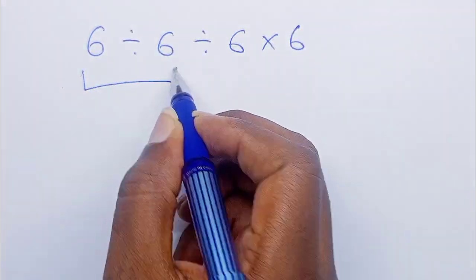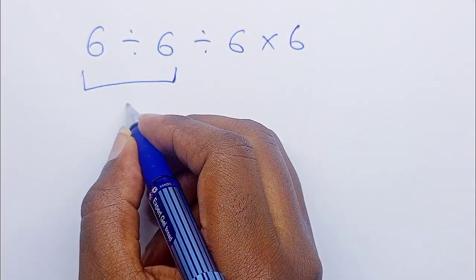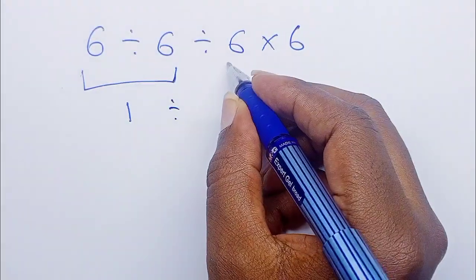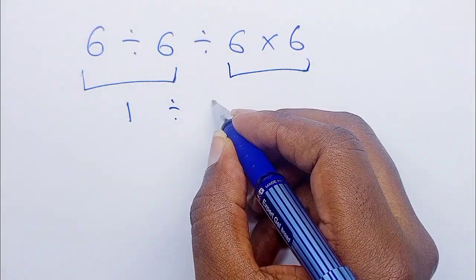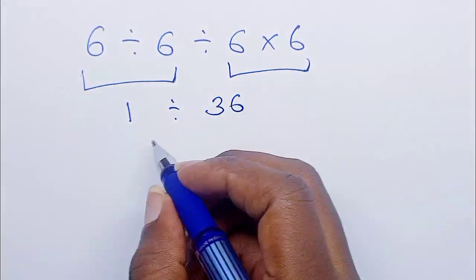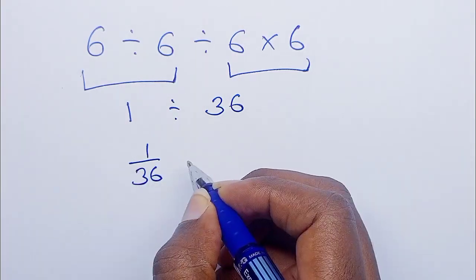So we have 6 divided by 6, which is 1. Then divide by 6 times 6 is 36. So 1 over 36.